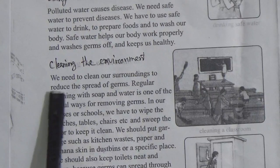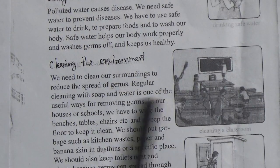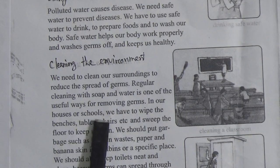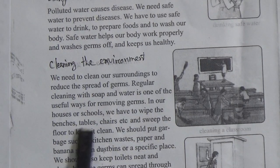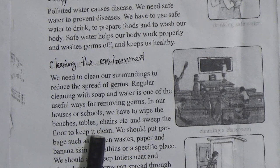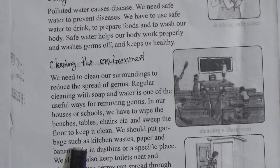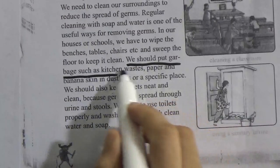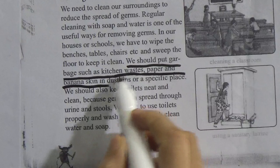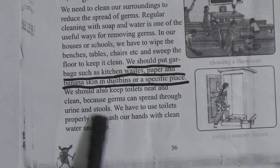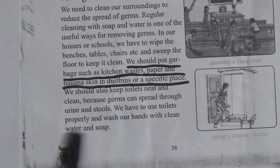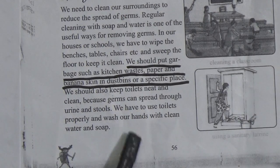Cleaning the environment. We need to clean our surroundings to reduce the spread of germs. Regular cleaning with soap and water is one of the useful ways for removing germs. In our houses or schools, we have to wipe the benches, tables, chairs, etc., and sweep the floor to keep it clean. We should put garbage such as kitchen wastage, paper or banana skin in a dustbin or a specific place. We should also keep toilets neat and clean because germs can spread through urine and stools. We have to use toilets properly and wash our hands with clean water and soap.